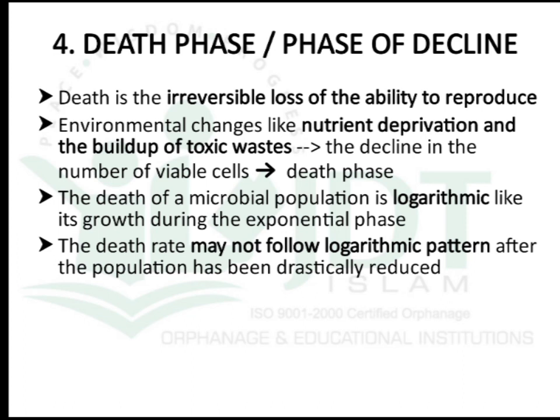The fourth phase is the death phase or phase of decline. Metabolic end products increase and nutrient supply decreases, leading to irreversible loss of ability to reproduce. Environmental changes build up toxic waste, causing a decline in the number of viable cells. The death phase of a microbial population is logarithmic, similar to its growth during the exponential phase, though after some time it may not follow the logarithmic pattern.